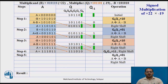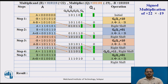In step 5, the operation depends on Q0 and Q-1 from step 4, which is 0-1, so the operation is A plus B and right shift. Perform A plus B — the result is 0-1-0-0-0-1. Keep the value of Q and Q-1 as-is. Then perform the right shift of A, Q, and Q-1 by 1 bit to the right. The values of A, Q, and Q-1 at end of step 5 are recorded in the table.